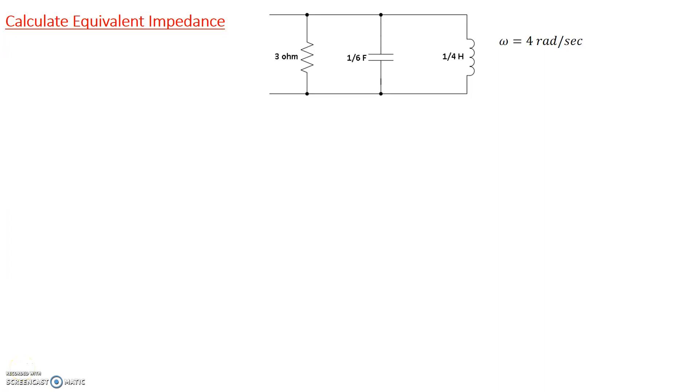All right, here we'll do an example where we'll calculate the equivalent impedance seen across the terminal. We have three items: a resistor, a capacitor, and an inductor. We'll find the equivalent impedance seen from this point. The circuit is running at 4 radians per second, which is the angular frequency of the AC circuit.